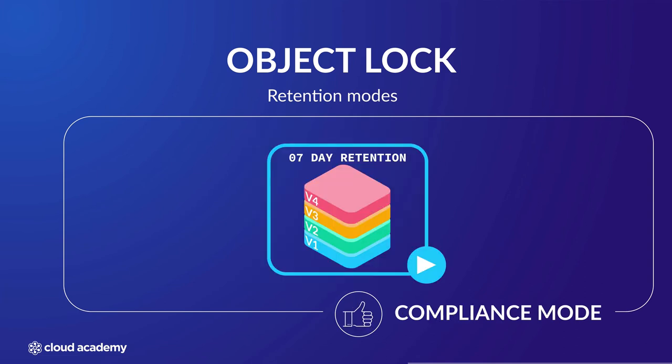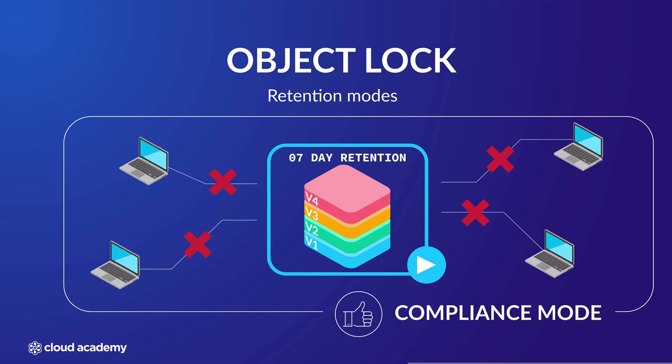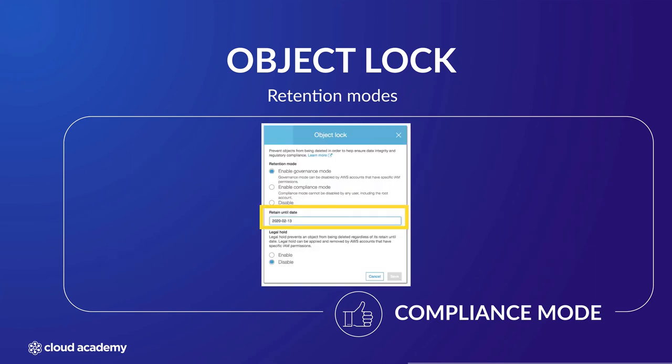Compliance mode. The key difference between compliance mode and governance mode is that there are no users that can override the retention period set or delete an object, and that also includes your AWS root account which has the highest privileges. Essentially, any object added to a bucket configured for compliance mode means that your object will remain for the duration of the retention period. Again, much like with governance mode, you will be asked to enter a retention period based upon a number of days.